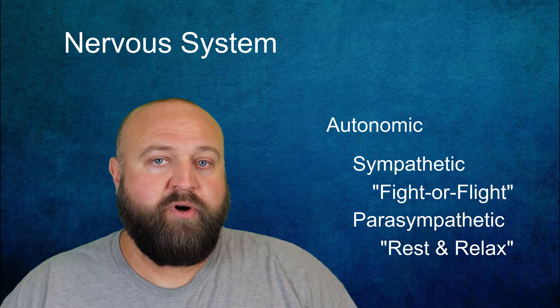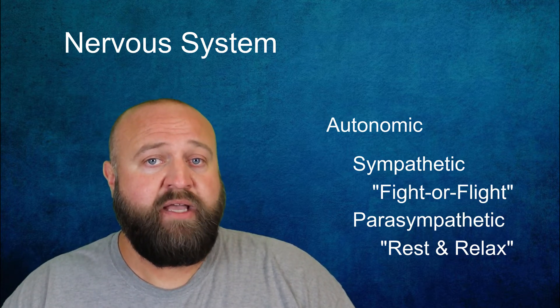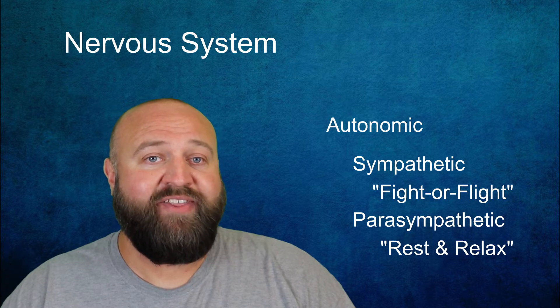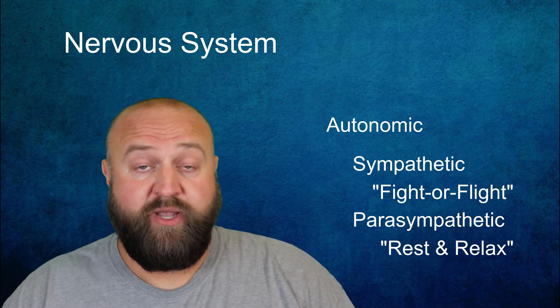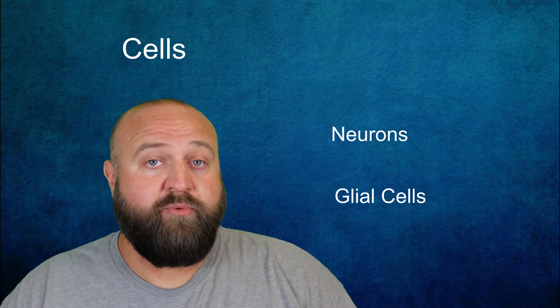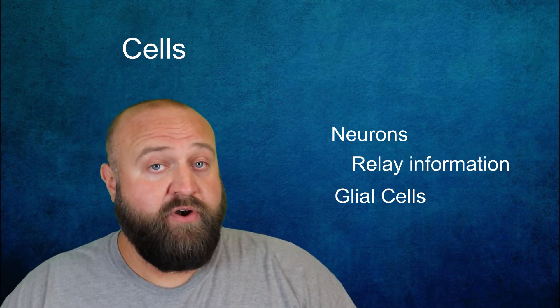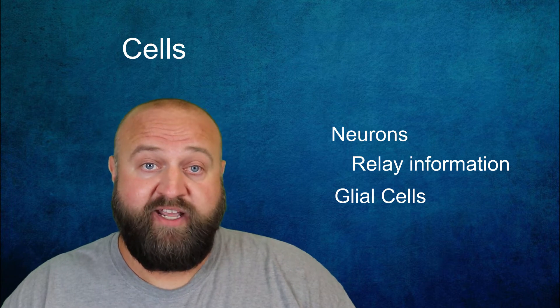To understand how your nervous system works we need to dig deeper than just the divisions of the nervous system and look at the cells that work together to make the nervous system function the way it does. There are two main types of cells in the nervous system, neurons and glial cells. Neurons have the primary role of relaying information throughout the nervous system and from the nervous system to other parts of the body.